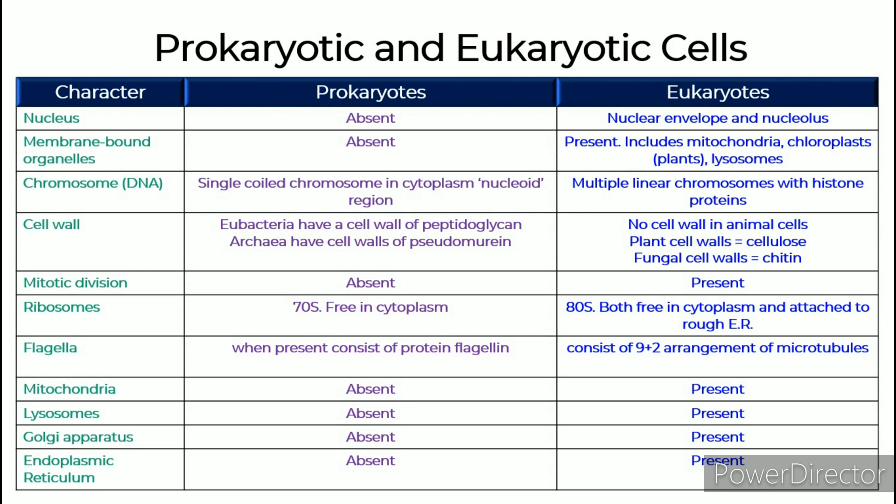Mitochondria: Prokaryotes do not have mitochondria, but eukaryotes do. Lysosomes: absent in prokaryotes, present in eukaryotes. Golgi apparatus: absent in prokaryotes, present in eukaryotes. Endoplasmic reticulum: absent in prokaryotes, present in eukaryotes.